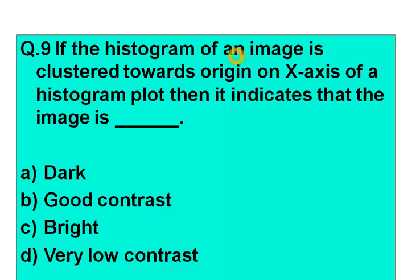Question number 9: If the histogram of an image is clustered towards the origin on the x-axis of a histogram plot, it indicates that the image is — fill in the blank. Option A: dark. Option B: good contrast. Option C: bright. Option D: very low contrast. Time started.